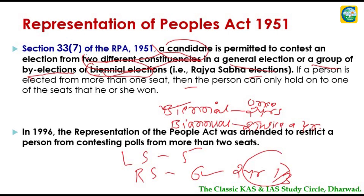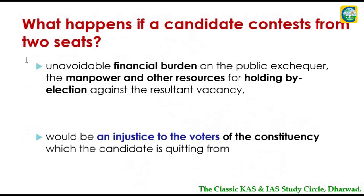Before the 1996 amendment, the Representation of the People Act allowed a candidate to contest from any number of constituencies. In 1996, restrictions were imposed, and as of today the provision is that one candidate can contest from a maximum of two constituencies. Now the Election Commission is recommending this be further reduced to just one constituency per candidate.